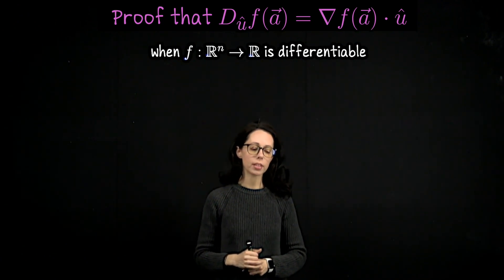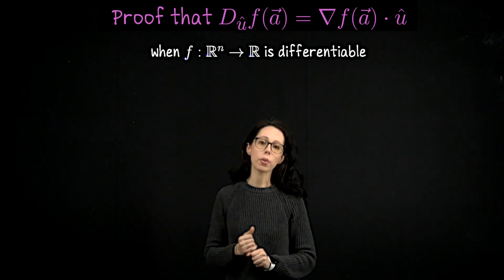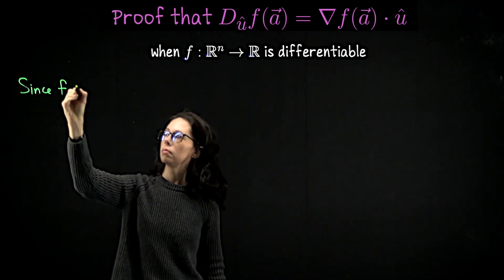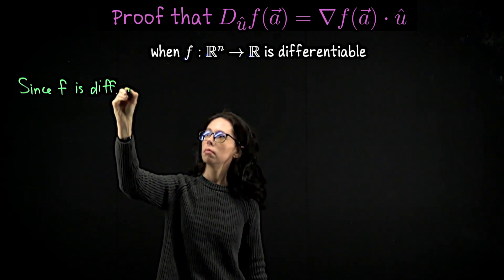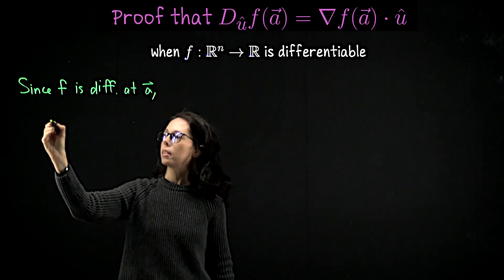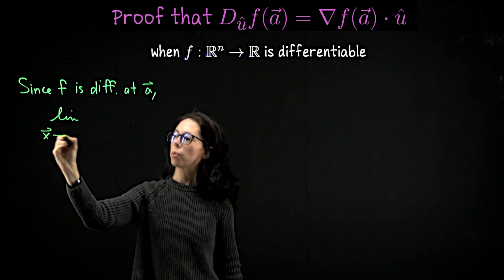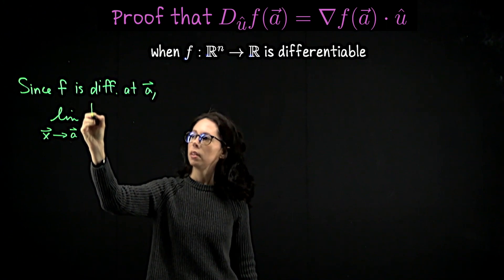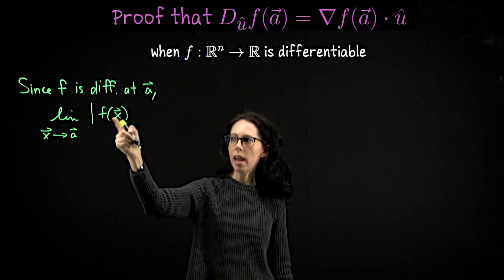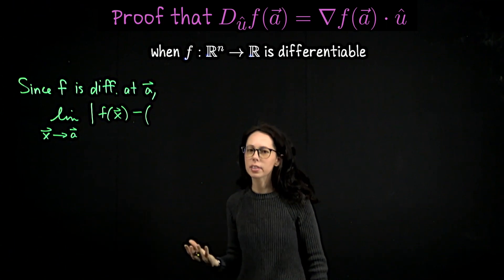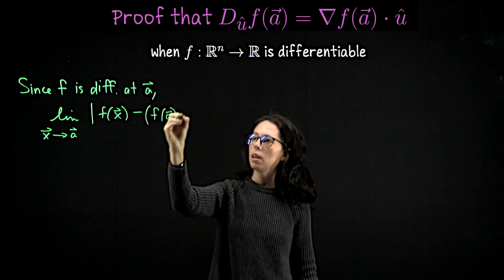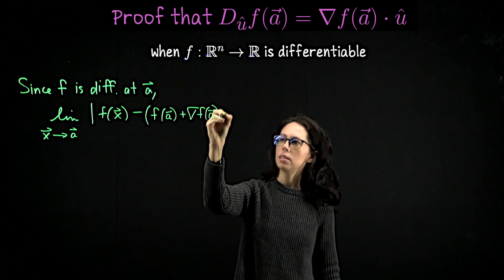We need f to be differentiable in order to do this. So let me write down what we know when our function is differentiable. Since f is differentiable at a, the following limit exists and equals zero: the limit as x approaches a in R^n of the distance between f evaluated at x and the linearization of our function at a. The linearization would be f at a plus the gradient of f at a dotted with x minus a.